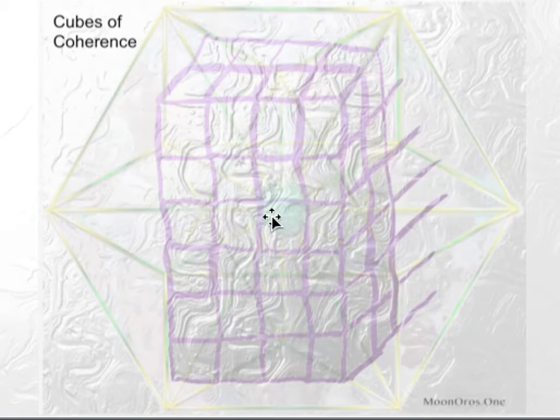This zero point field as represented by the vector equilibrium is also assisting us to dissolve all that is no longer in resonance for our personal ascension path. We allow it to dissolve into the zero point field.